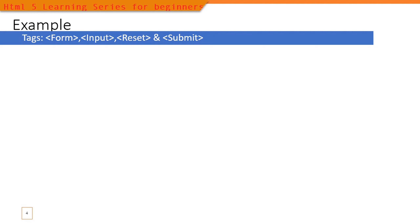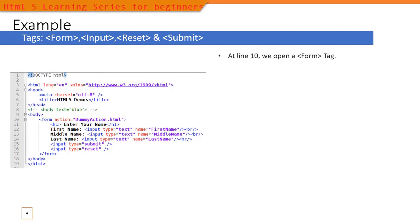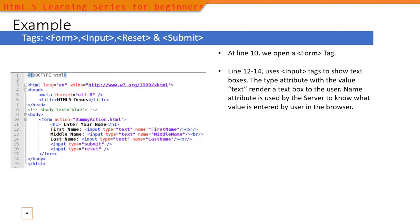Now we will look at the example. At line 10 we open the form tag and close it at line 17. Between the form tags we place all user navigable elements as well as the submit button. At lines 12 to 14 we placed multiple input tags with the type attribute set to text, which means these three input tags are text boxes.